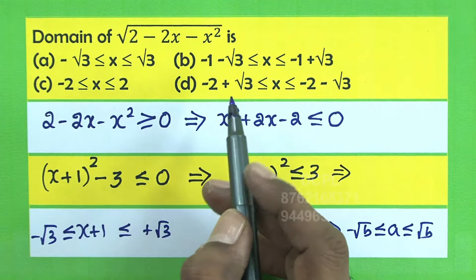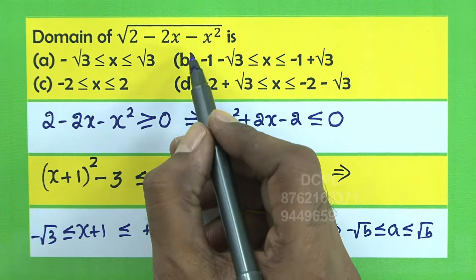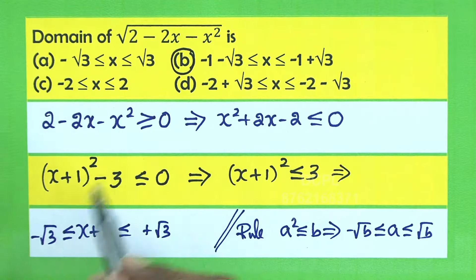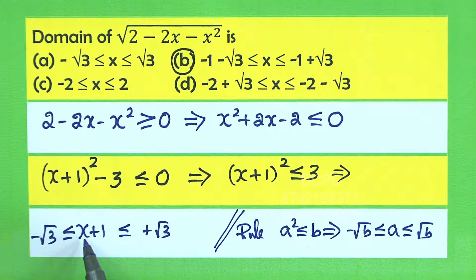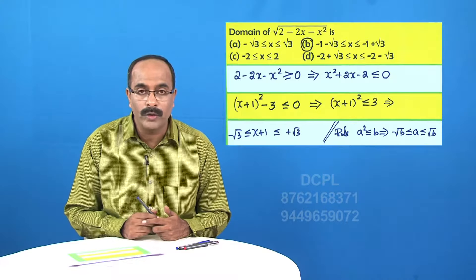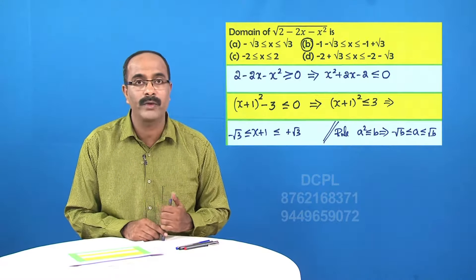Subtracting 1 from all parts: -√3 - 1 ≤ x ≤ √3 - 1, which is the same as -1 - √3 ≤ x ≤ √3 - 1. We can see option B matches. It is a very simple problem — please make a note of this.